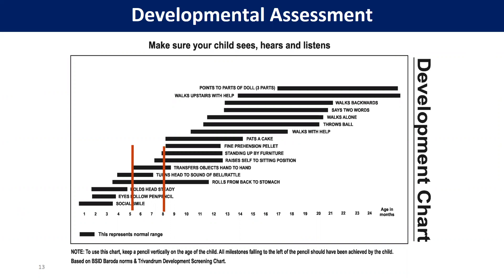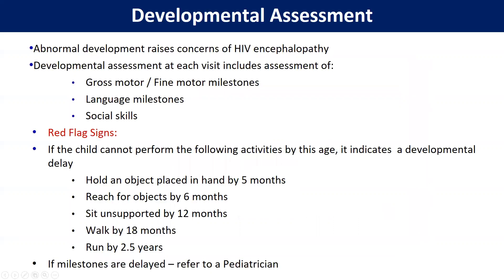In developmental screening, we see whether the child is developing as per their peer age. For example, if you see a five-month-old boy or girl who is unable to hold his or her head steady, we have to think that there is some delay in development. This is important because in a patient with HIV, if there is abnormal development without any other focus of infection, think of HIV encephalopathy. So developmental assessment should be done at each visit.